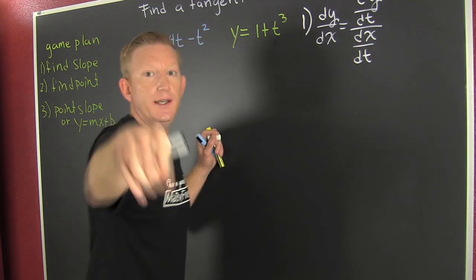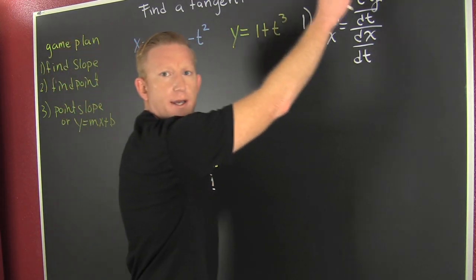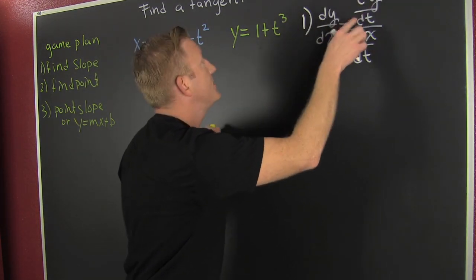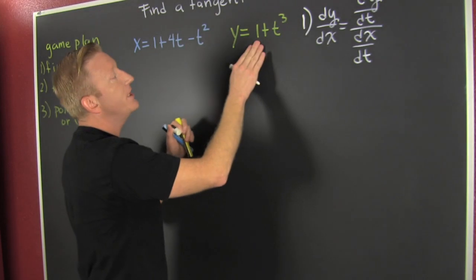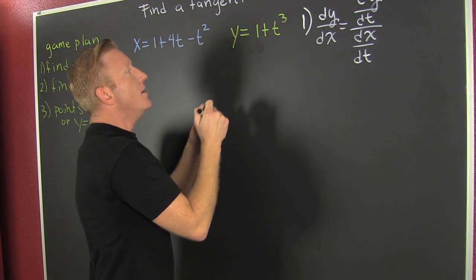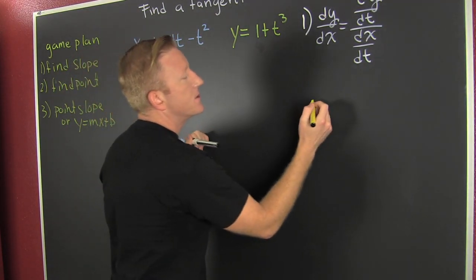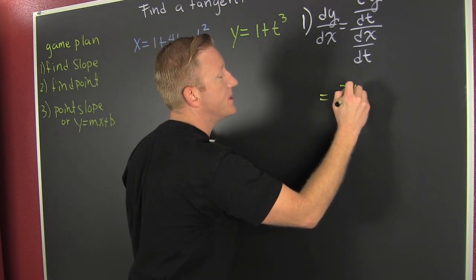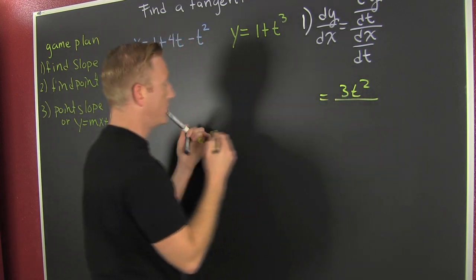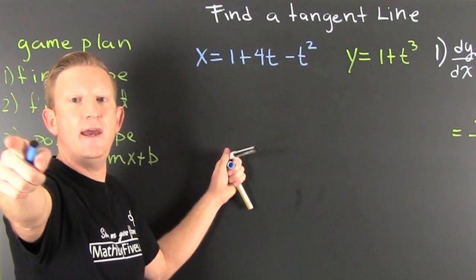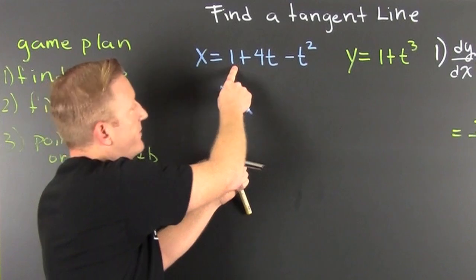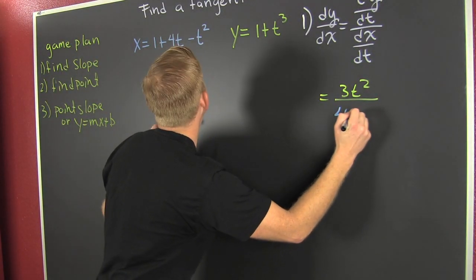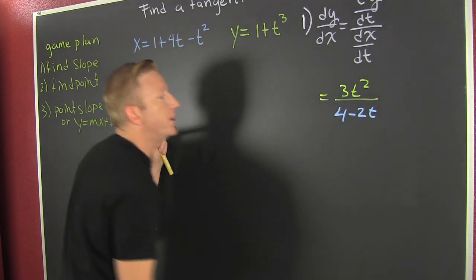So we need to find dy dt. Now, here we are. We need to find the derivative of this guy with respect to t. So here we see that this is going to be 3t squared. And then I need to find the derivative of this guy. And that appears to be 4 minus 2t.